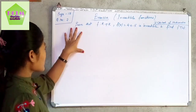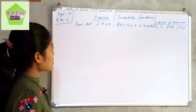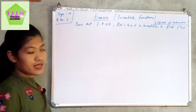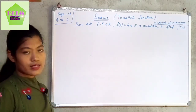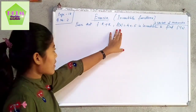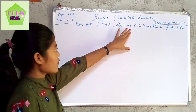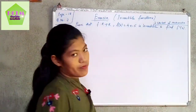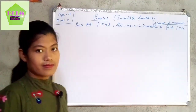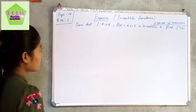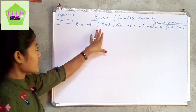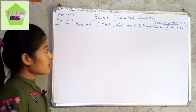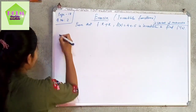The question is: prove that f is a function from R to R such that f(x) = 4x − 5 is invertible, and find f inverse of x. So we need to prove this function f is invertible and also find f inverse of x.